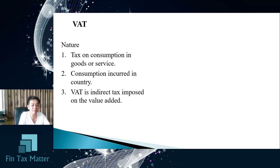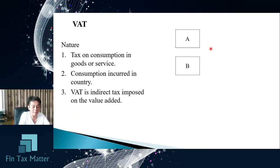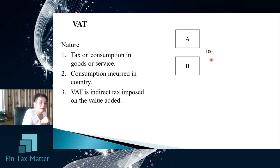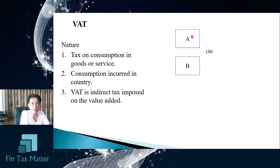The nature of VAT is that it is a tax on consumption within the country, and it is a kind of indirect tax imposed on the value added. Consider a transaction between buyer and seller: we assume A is a seller and B is a buyer. When A sells a product to B for 100 baht — assuming the product is a VAT product — if A is a VAT operator or VAT registrant, A will charge an additional 7%, which is the current rate in Thailand.